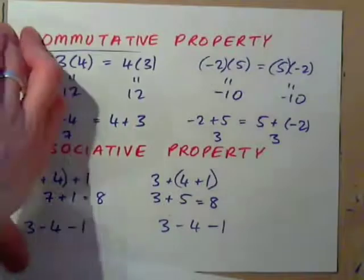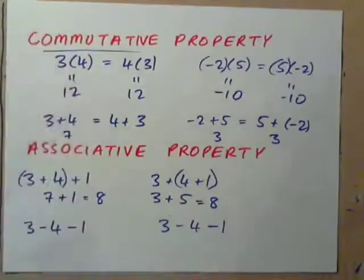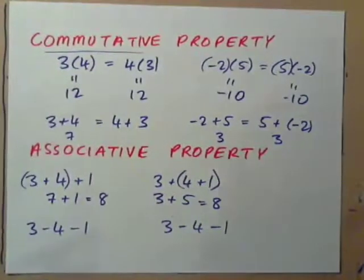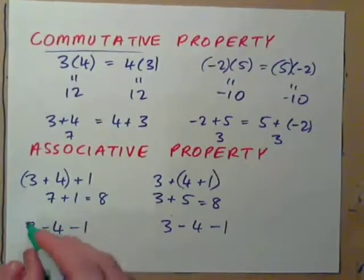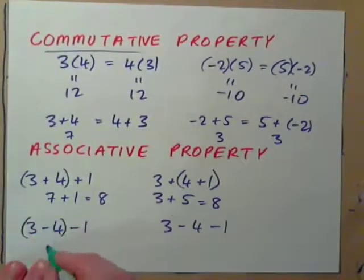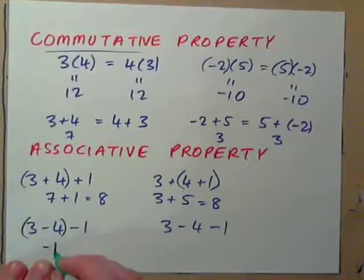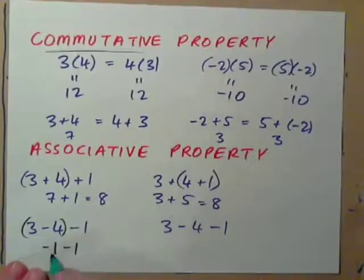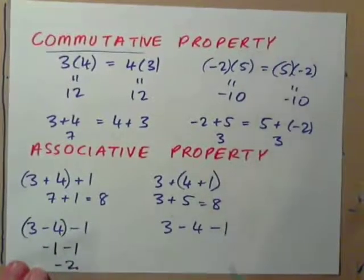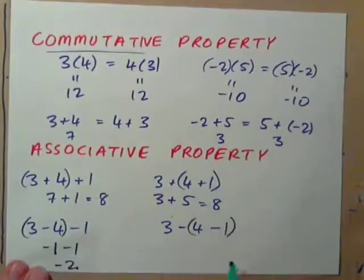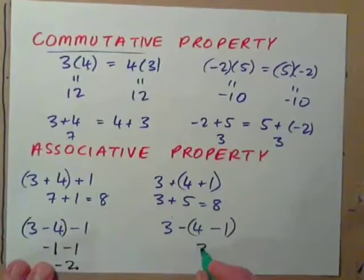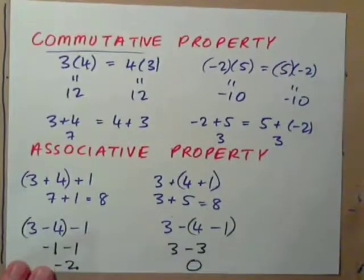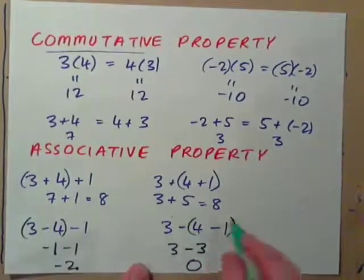But, subtraction, we have a problem. Because, if we do this, go 3 minus 4 first. 3 minus 4 is negative 1. And then subtract 1. Negative 1 minus 1 is negative 2. But, if we did this first. 4 minus 1 is 3. But, 3 minus 3 is 0. So, subtraction is not associative.